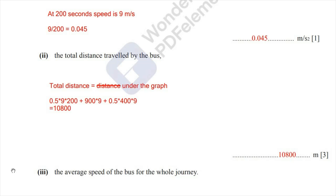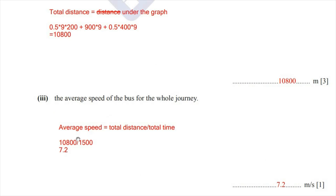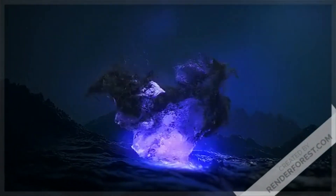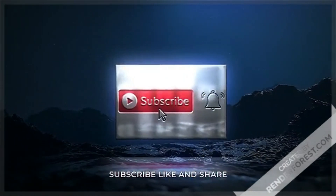The last part: find the average speed of the bus for the whole journey. The formula is total distance divided by total time. We already calculated the total distance as 10,800 metres. From the graph, the total time is 1,500 seconds. So we divide 10,800 by 1,500, which equals 7.2 metres per second. That is the average speed at which the bus was moving.